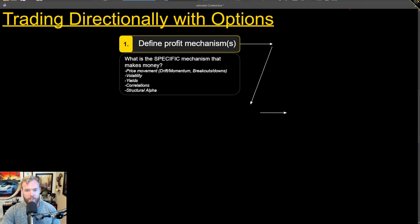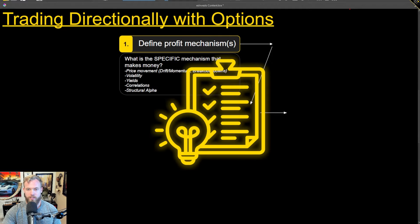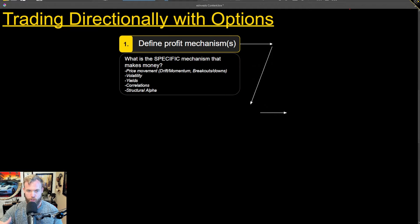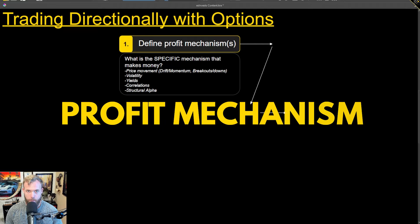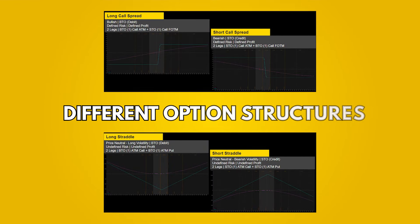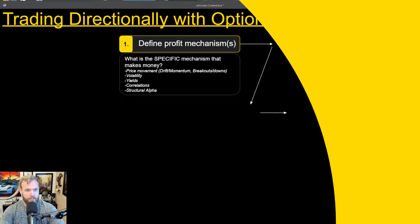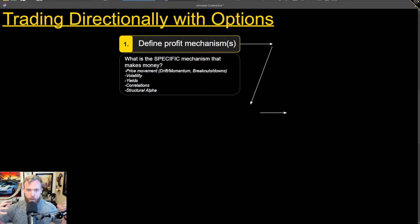I'm going to give you some general concepts to keep in mind about trading directionally with options, and then we'll get into the specifics about meme stocks as an example. When we're trading directionally with options, there are a few things that need to be nailed down before we even start. The first one is the profit mechanism. A lot of people will start just picking different option structures, not paying attention to the fact that if you pick the wrong structure, you may or may not make money. But what I can guarantee you is that if you don't have a defined profit mechanism, it doesn't matter what option structure you pick — you won't make money.